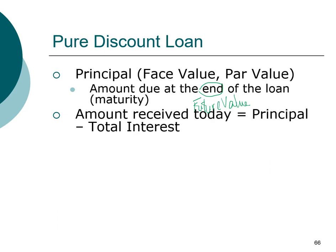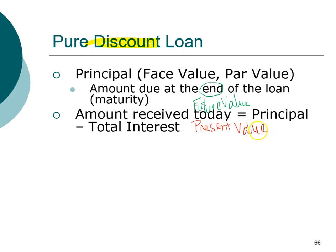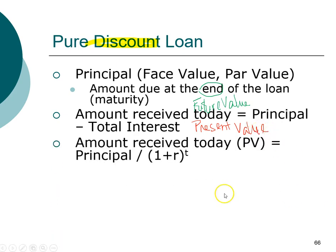The amount that you receive today if you are signing up for a pure discount loan is not the principal — you don't get the entire amount you quote-borrow. Instead, the amount you receive today is the principal minus the total interest. This is where the term discount comes from: we are discounting the interest from the principal to get the amount you receive today, which is the present value.